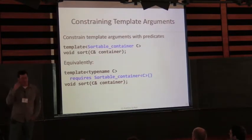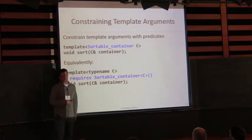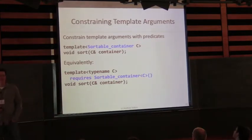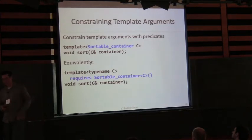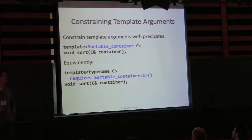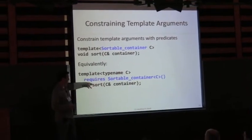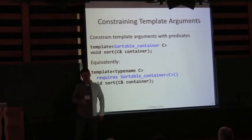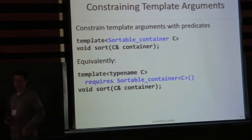So, constraints. We can write constraints as part of the type of a template parameter. For example, I can declare a function called sort whose template parameter is declared as SortableContainer, which states the requirements on the template parameter C. This is exactly equivalent to writing it with a requires clause — the compiler does a transformation and gives you that form. The requires clause is followed by a constant expression, and what it says is that this must evaluate to true in order for this to be instantiated. If not, it becomes a non-viable candidate. That's Concepts Lite in a nutshell.